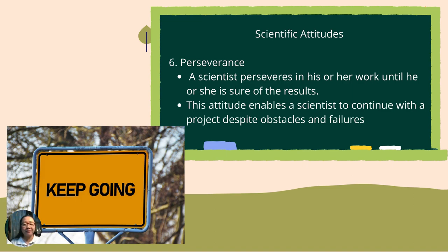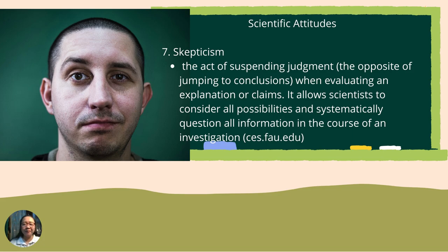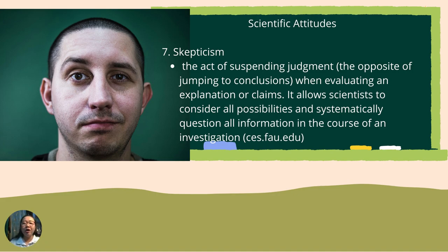Another scientific attitude is skepticism. Look at the picture — what does his facial expression imply? Is it yes, no, or maybe? It implies maybe, meaning he is in doubt. So skepticism in its simplest meaning is being in doubt, uncertain, or not sure. Skepticism is the act of suspending judgment — the opposite of jumping to conclusions — when evaluating an explanation or claim. It allows scientists to consider all possibilities and systematically question all information in the course of an investigation. This attitude of uncertainty is good because it allows you to question things.